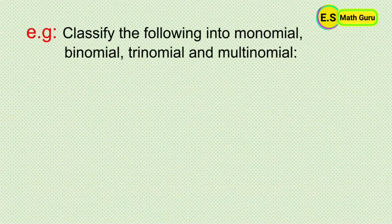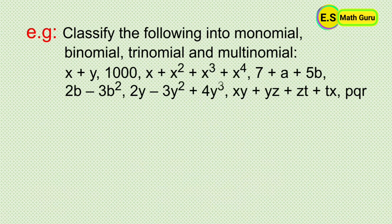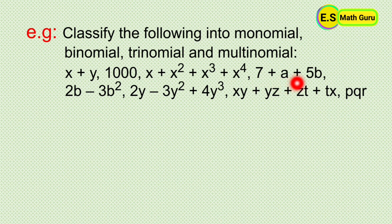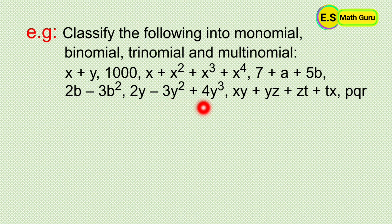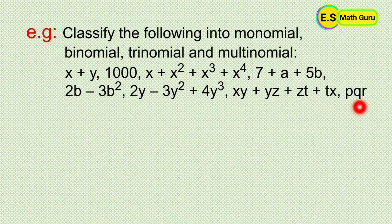Classify the following into monomial, binomial, trinomial, and multinomial: x plus y; 1000; x plus x squared plus x cubed plus x to the power 4; 7 plus a plus 5b; 2b minus 3b squared; 2y minus 3y squared plus 4y cubed; xy plus yz plus zt; x plus x; and pqr.